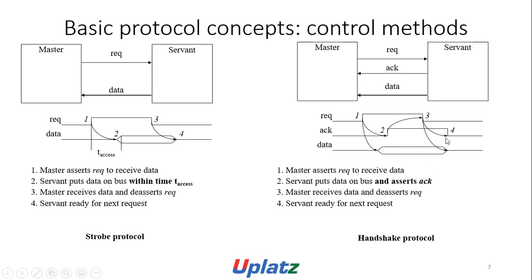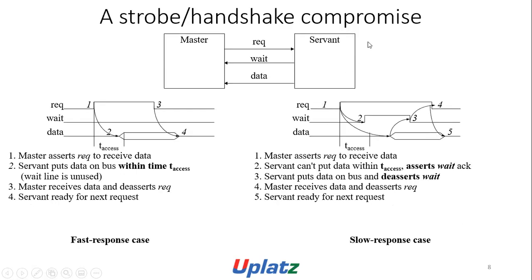In the handshake, when de-asserting request, the servant also de-asserts both acknowledgement and data. There are two cases for the wait-based protocol. Fast response case: master asserts request, servant pushes data within t-access, wait line is unused, master receives data and de-asserts request. Slow response case: master asserts request, servant cannot put data within t-access so asserts wait/acknowledge, then puts data on bus and de-asserts wait, master receives data and de-asserts request, servant is ready for next request.